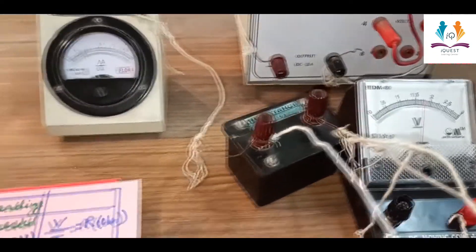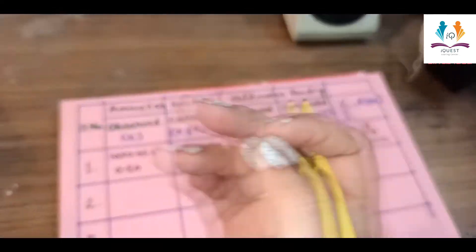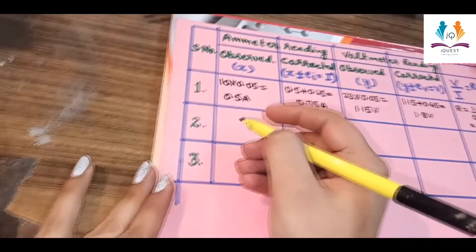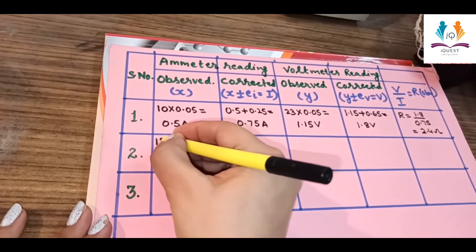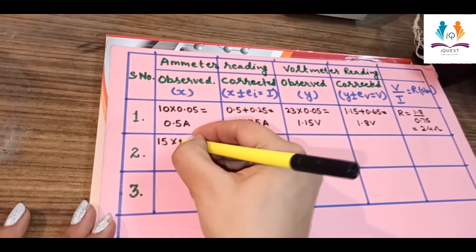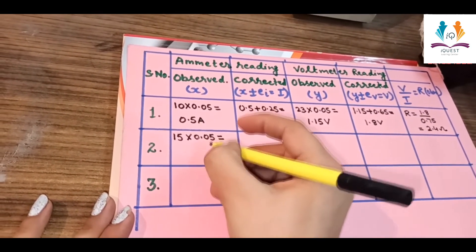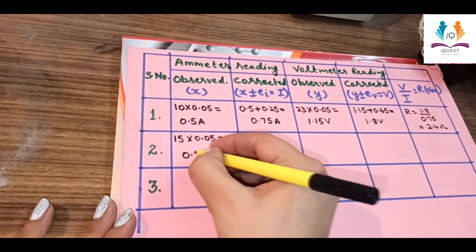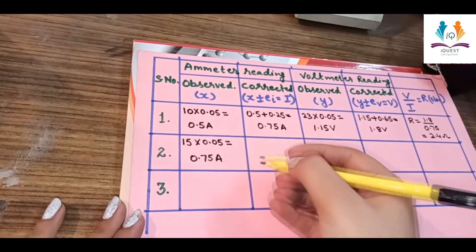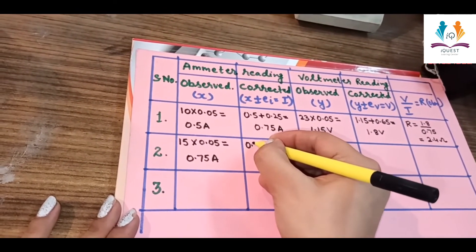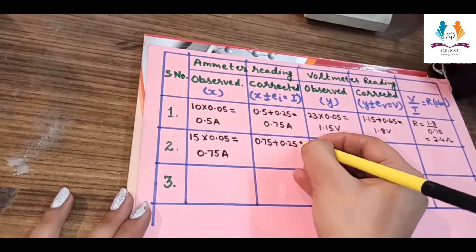Now let's do the calculation. The ammeter reading is 15 divisions multiplied by the least count of 0.05 ampere, which equals 0.75 ampere. The corrected reading is 0.75 plus the error 0.25, giving 1.0 ampere.